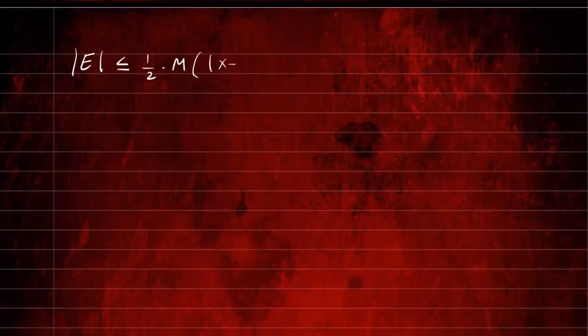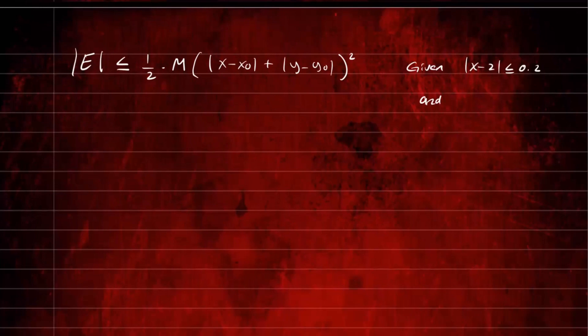Now, to find the magnitude of the error, we know the error in absolute value is less than or equal to (1/2) times M times (|x - x₀| + |y - y₀|)². We're given that |x - 2| ≤ 0.2 and |y - 5| ≤ 0.2. We'll use those values in our error bound formula. So let's find M by computing the second partial derivatives.